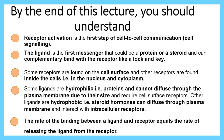By the end of this lecture, you should understand that receptor activation is the first step of cell-to-cell communication — i.e., cell signaling. The ligand is the first messenger, which could be a protein or a steroid, binding complementarily with the receptor like a lock and key. Some receptors are found on the cell surface; others are found inside the cells — within the nucleus and cytoplasm. Some ligands are hydrophilic, such as proteins, and cannot diffuse through the plasma membrane due to their size, therefore requiring cell surface receptors. However, lipid ligands such as steroid hormones are hydrophobic and can diffuse through the plasma membrane to interact with intracellular receptors. The rate of ligand binding to the receptor equals the rate of releasing the ligand from the receptor.